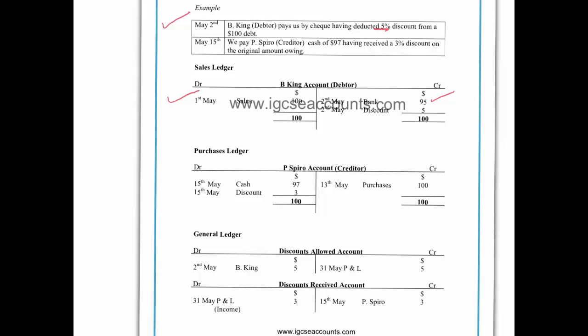So to make both sides equal and to kill off this account, we do the double entry for the discount allowed. The $5 that we allowed them as a discount would be credited to the debtor account in your sales ledger and debited in your special discounts allowed account in the general ledger. The discount allowed is then entered as an expense in your profit and loss account or income statement.